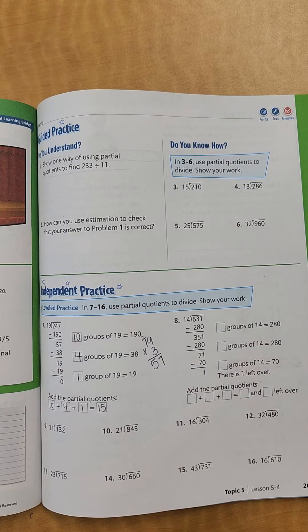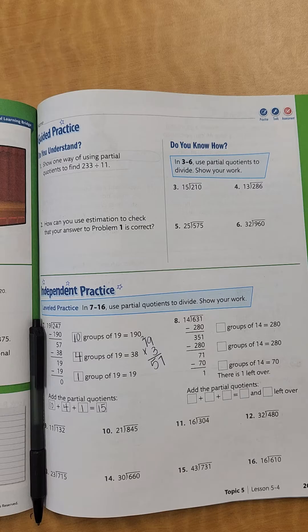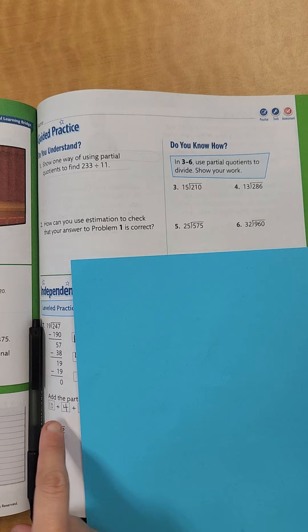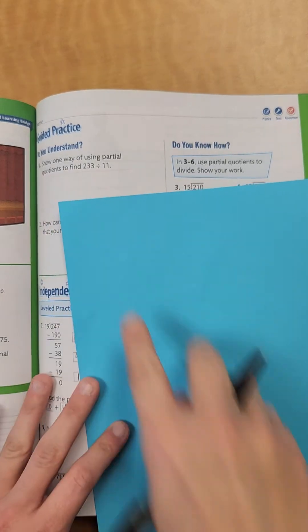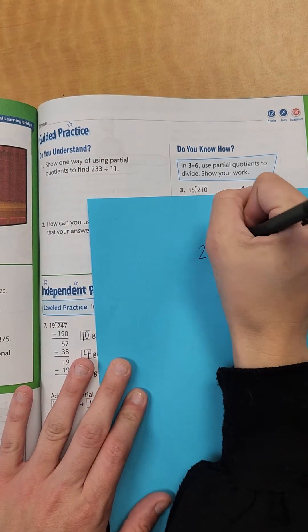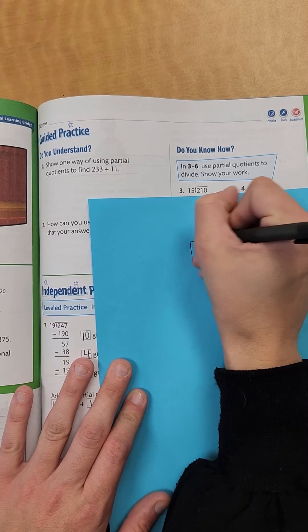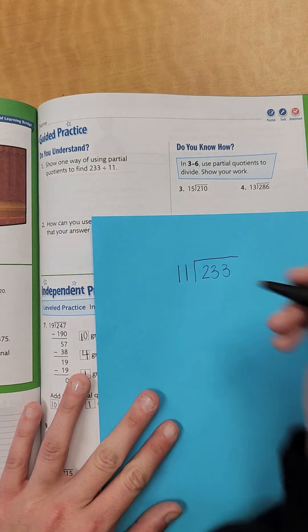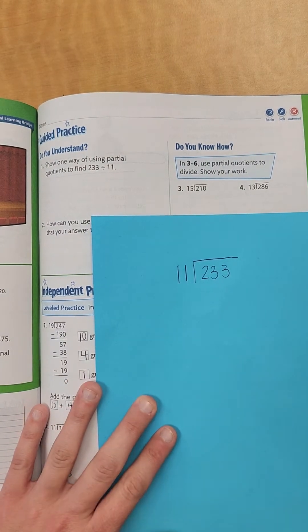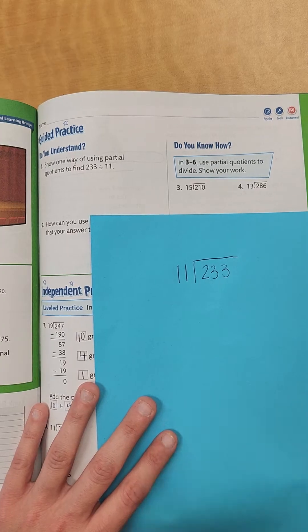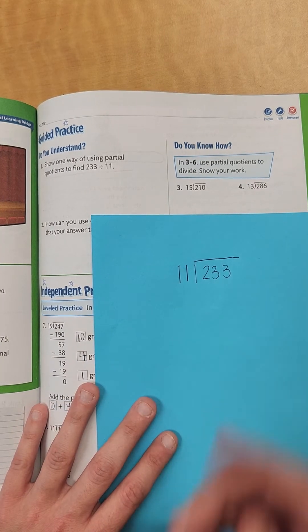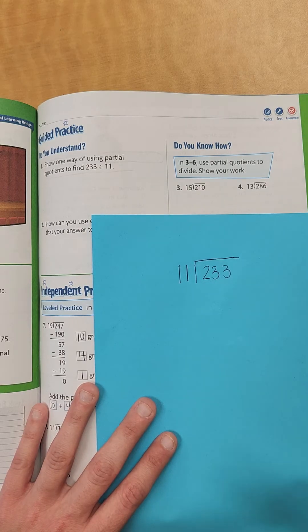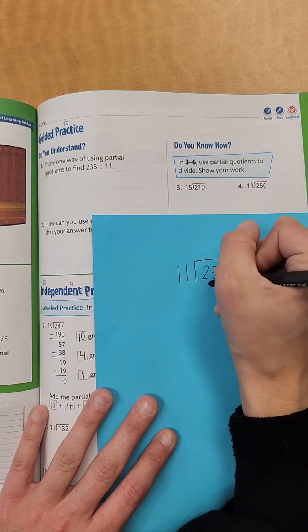Let me grab a scrap piece of paper, and I want you to do the same, and we're going to do this next part. So I got my scrap paper. We're going to do number one. It's 233 divided by 11. So now, if I multiply 11 times 10, I say 11 times 10, or whatever my first number is times 10, because typically we can get it in there at least 10 times, so that makes it a little easier for us.